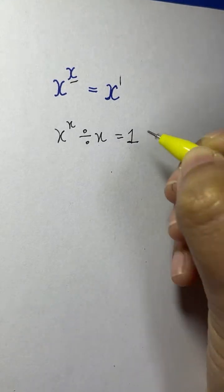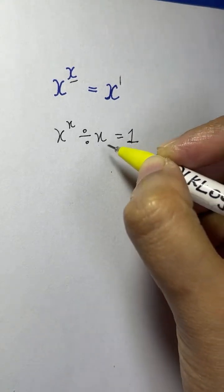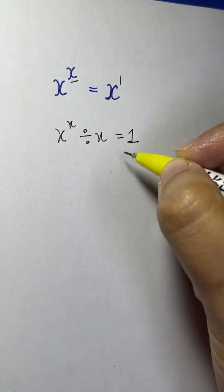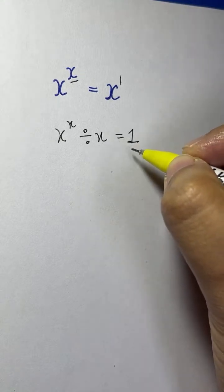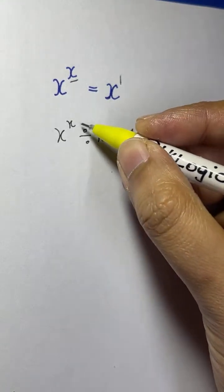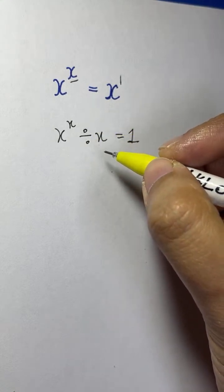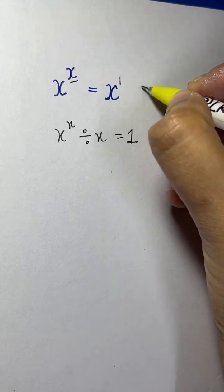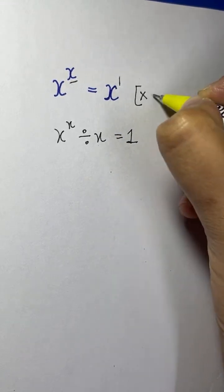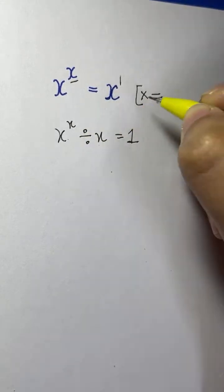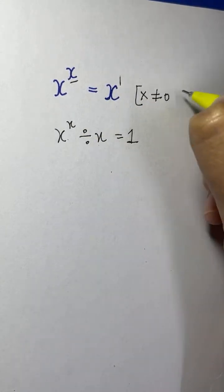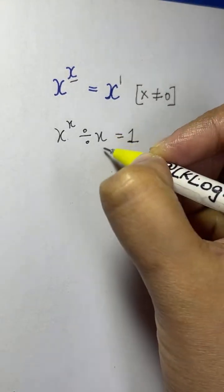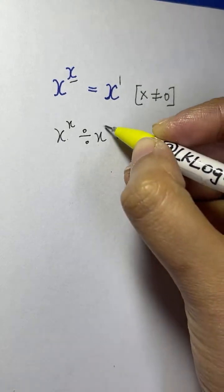Now, how should we explain this? x cannot be equal to 0. The question is: can x be equal to 0? No, it cannot, because 0 to the power of 0 is not valid — x to the power of 0 to the power of 0 has no meaning. So x is not equal to 0. And this x here has an exponent of 1.